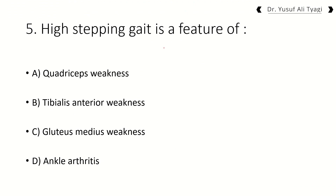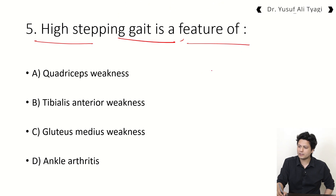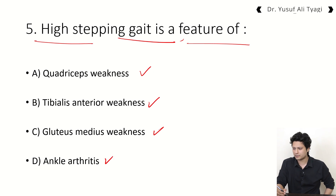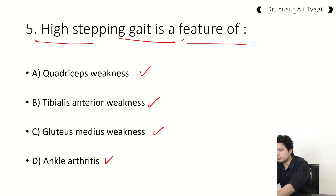The question is: high stepping gait is a feature of. The original question was asked in simpler language — foot drop is a feature of — and the answer is common peroneal nerve injury. We have slightly modified the question for a broader perspective. The options are: quadriceps weakness, tibialis anterior weakness, gluteus maximus/medius weakness, and ankle arthritis.